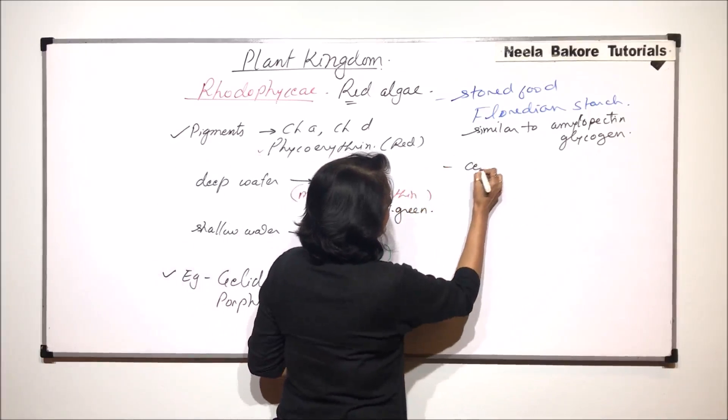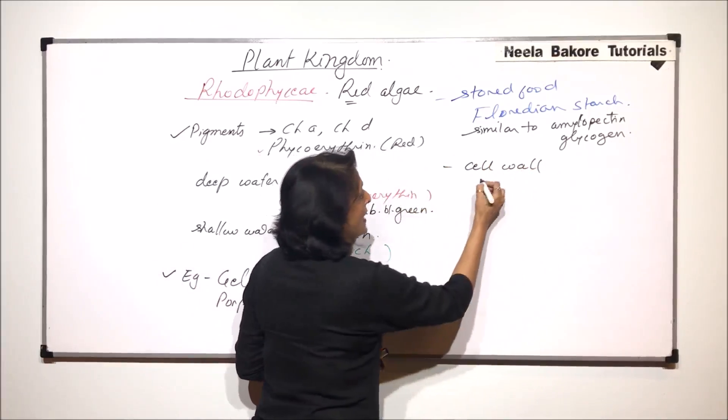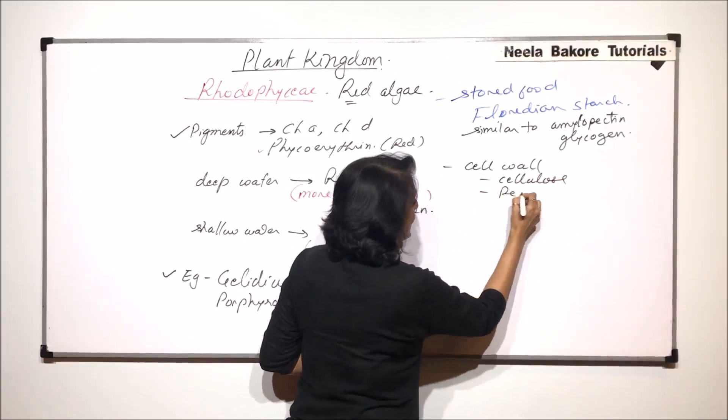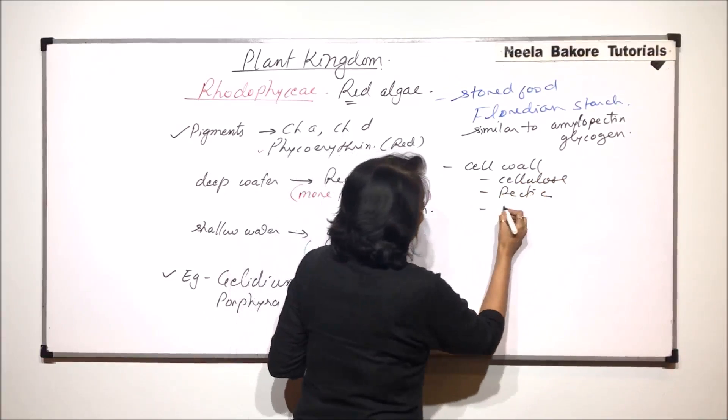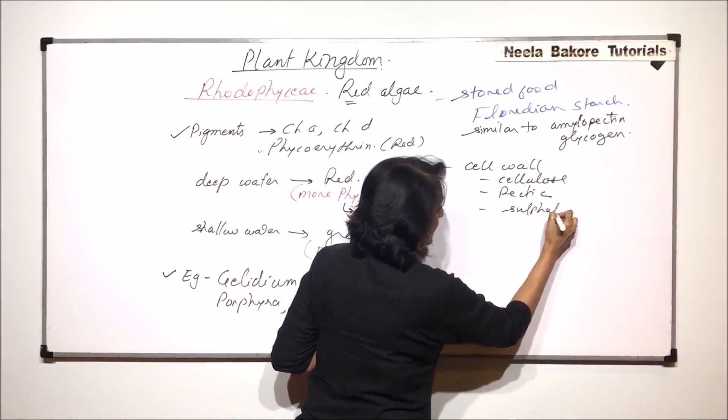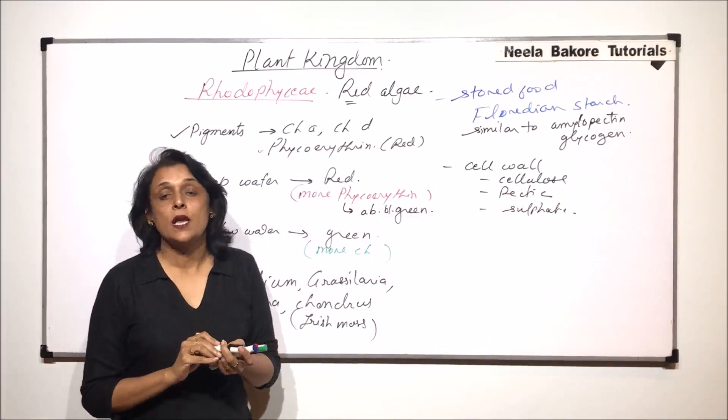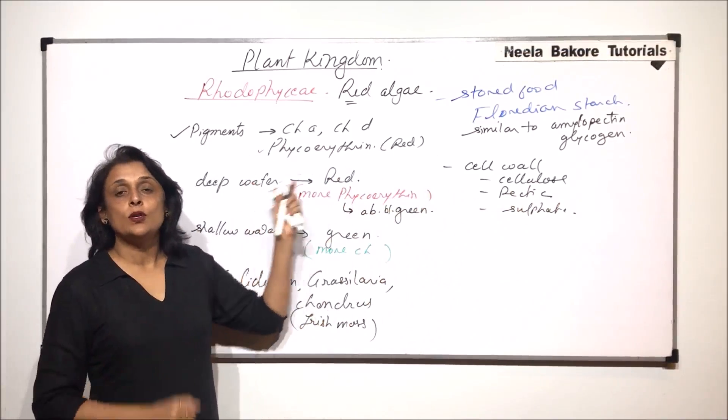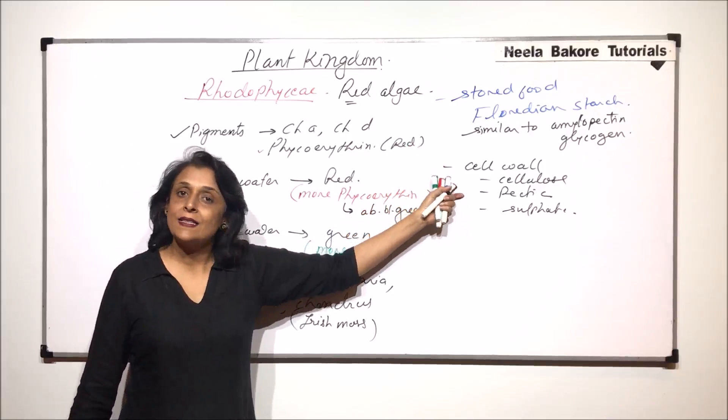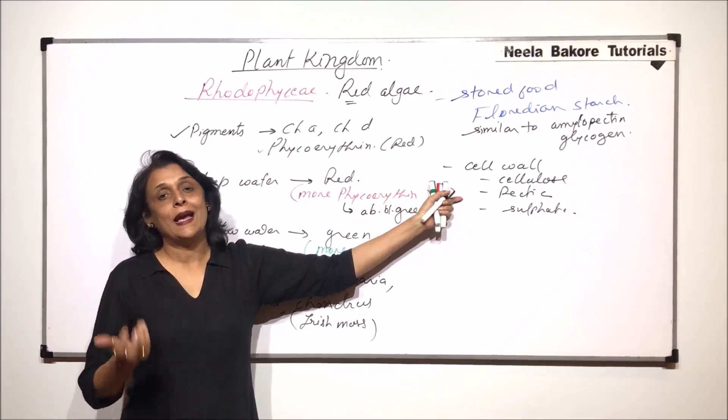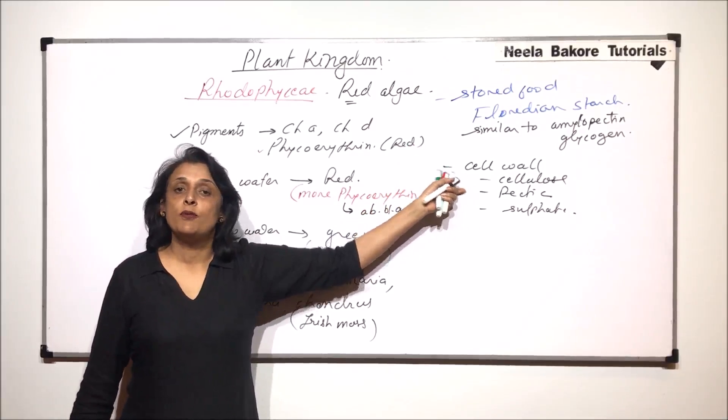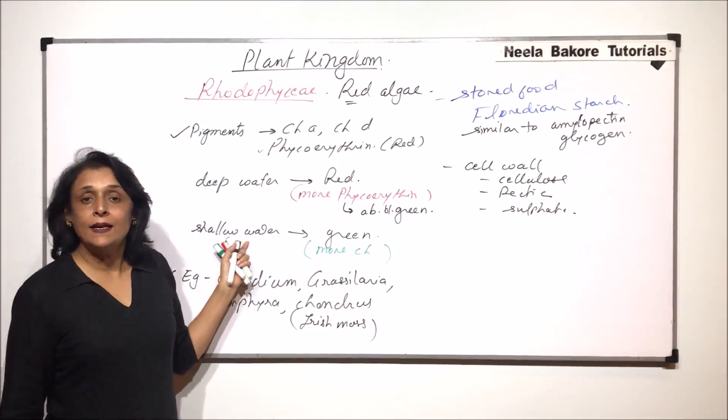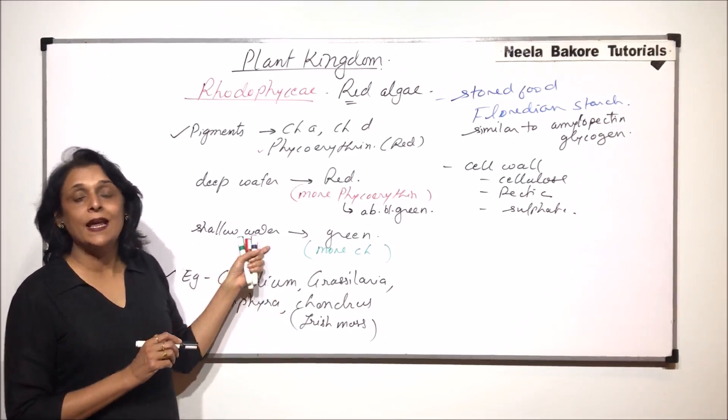Now, the next thing is the cell wall. The cell wall has multiple things that is it has cellulose also. It also has pectic material and some sulfates also. So cell wall is not purely cellulose. It has other substances along with cellulose. So pigment we know, the reserved or the stored food also we are aware of, and the cell wall because it is a plant. So plant has to have a cell wall. Only thing is instead of pure cellulosic material, there are other things which are deposited in it. And the color also is variable. This we have seen and the reason for it.